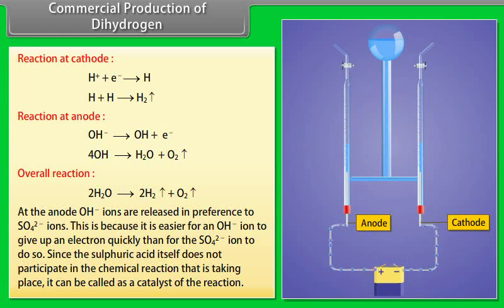At the anode, OH minus ions are released in preference to SO4 2 minus ions. This is because it is easier for an OH minus ion to give up an electron quickly than for the SO4 2 minus ion to do so. Since the sulphuric acid itself does not participate in the chemical reaction that is taking place, it can be called as a catalyst of the reaction.